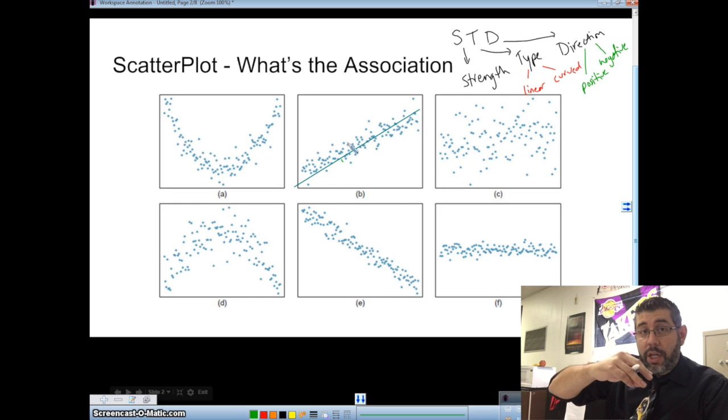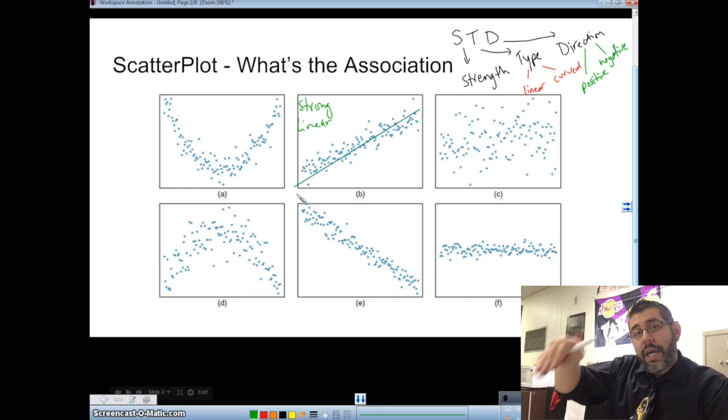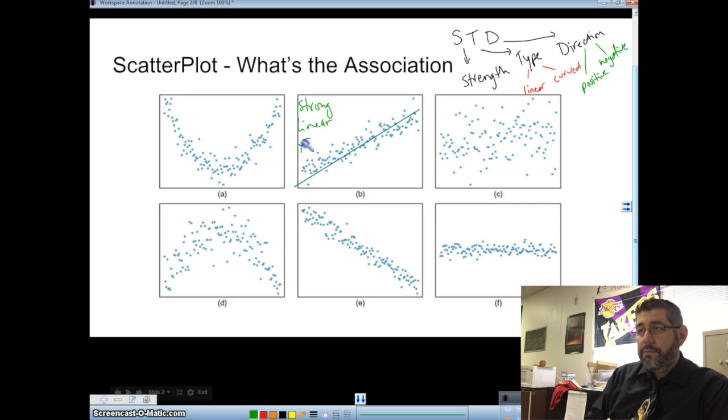If I drew a line through these data, then you'll notice that all these points are pretty close to the line. Now, since those are really close together, we would say this is a strong relationship. They all kind of go in a line, so it's a linear relationship. So I did my strength and my type. And then my direction, since I'm going up, this is a positive slope. So I have strong, linear, and positive.